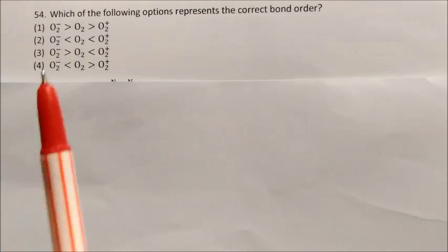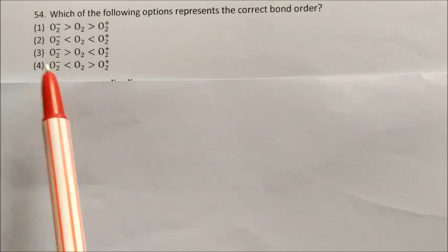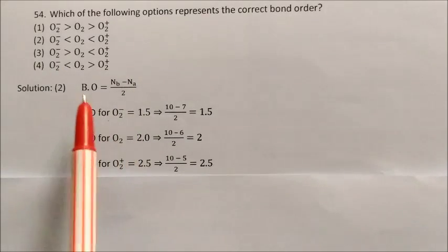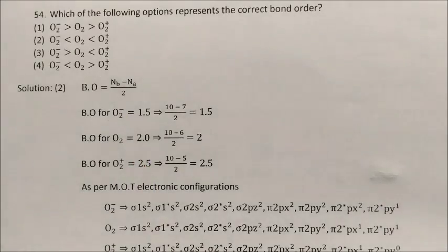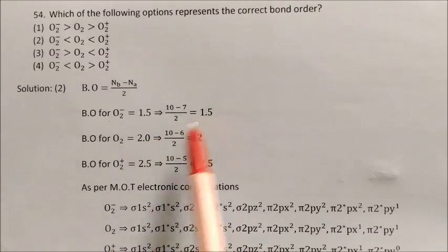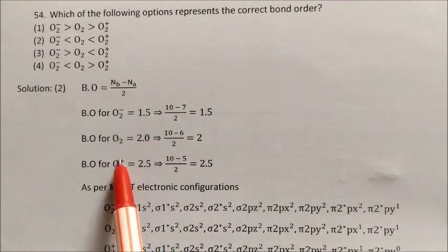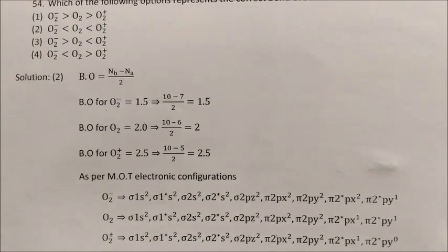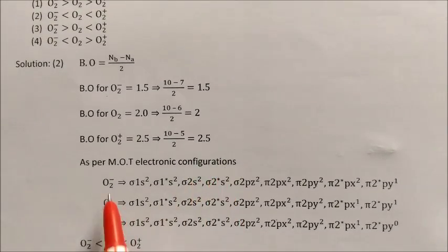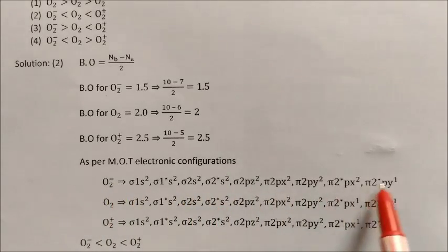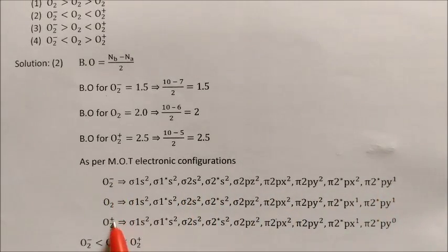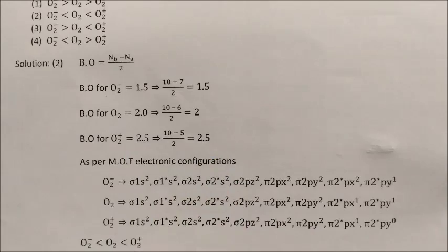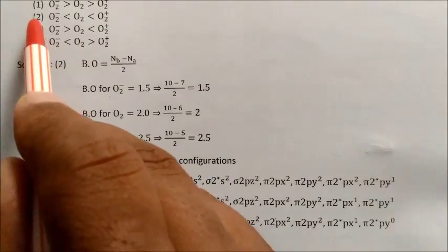Question: Which of the following options represents the correct bond order? Using the formula: bond order = (Nb − Na)/2. For O2−, bond order = 1.5. For O2, bond order = 2. For O2+, bond order = 2.5. Based on molecular orbital theory electronic configurations: bond order of O2+ is highest (2.5), followed by O2 (2), followed by O2− (1.5). The correct option matches this order.